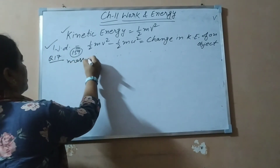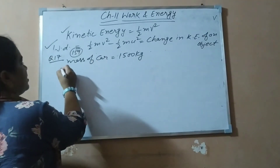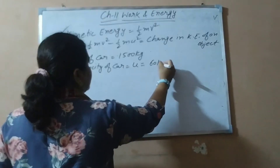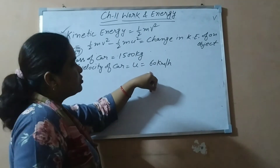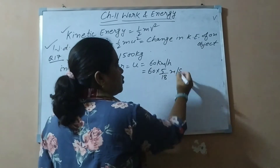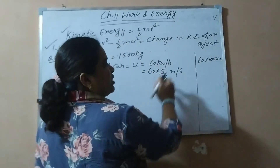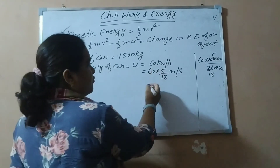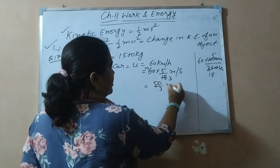Mass of the car is equal to 1500 kilograms. The initial velocity of the car is 60 kilometers per hour. Since the SI unit of velocity is meters per second, we need to convert it. We multiply by 5 over 18. You can verify: 60 into 1000 meters divided by 3600 seconds — zeros cancel — and you get 50 by 3 meters per second.